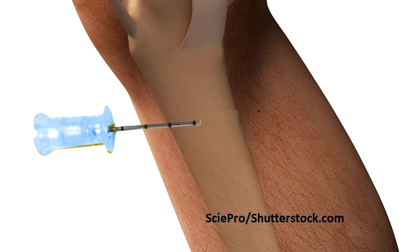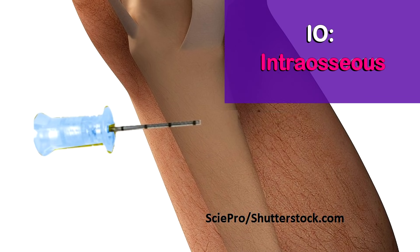Next is the intraosseous route, known as the IO route. This isn't very common because it's used in emergency situations, where access is placed in the marrow of the bone. It may be used during a code blue situation when IV access cannot be obtained. Medications and fluids can be given through this route and will enter into the vascular system.